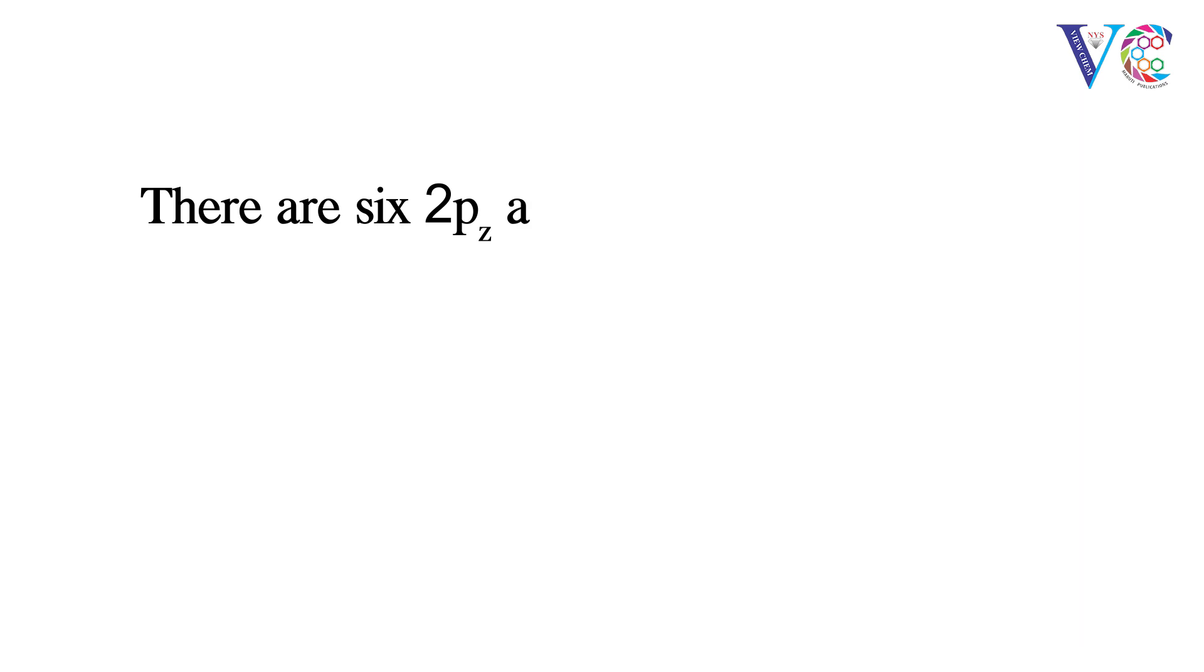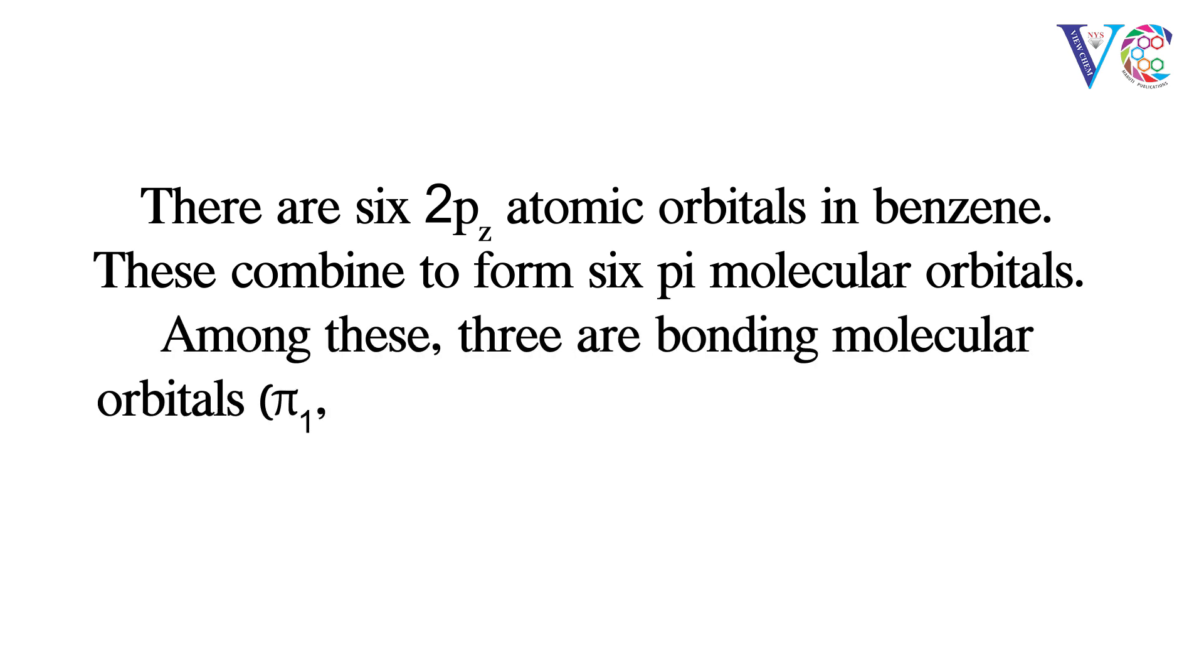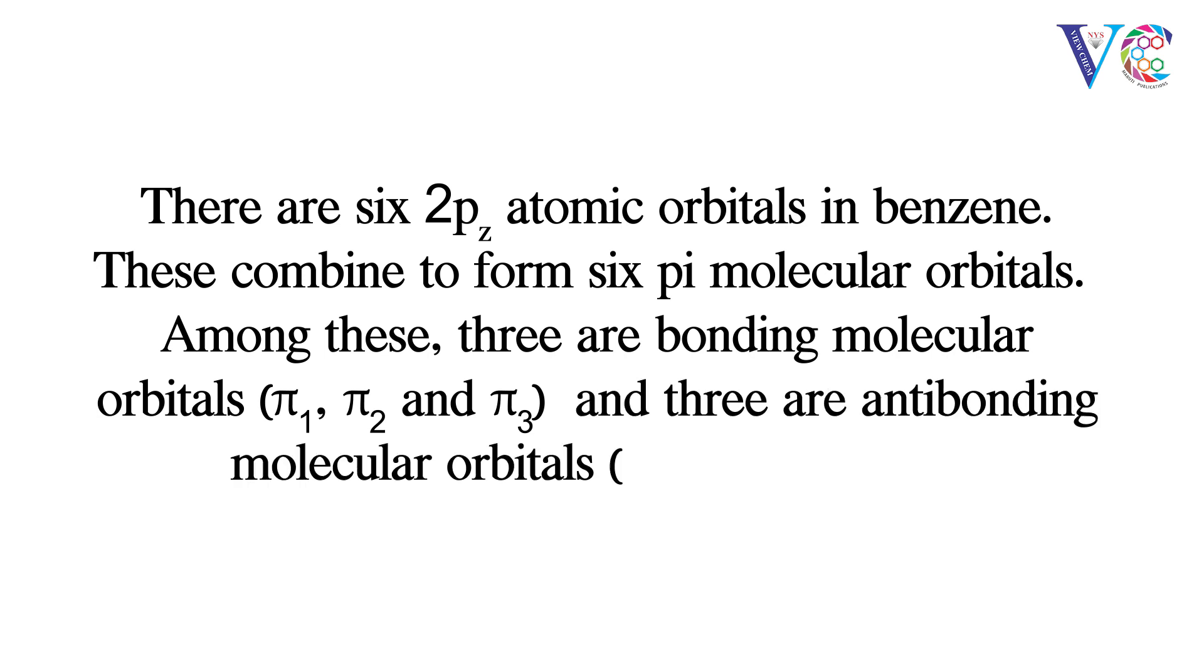There are six two-pz atomic orbitals in benzene. These combine to form six pi molecular orbitals. Among these, three are bonding molecular orbitals (pi 1, pi 2 and pi 3), and three are anti-bonding molecular orbitals (pi star 4, pi star 5, and pi star 6).